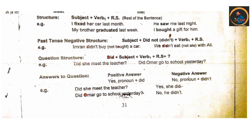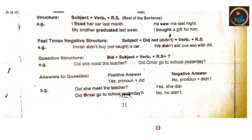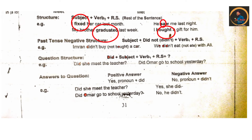Then we have structures: positive, negative, and interrogative with answers to questions. The positive structure is subject plus verb second form plus rest of the sentence. For example: 'I fixed her car last month' — last month is an adverb phrase, and fixed is the second form of fix. More examples: 'My brother graduated last week,' 'He saw me last night,' 'I bought a gift for him.' In positive sentences, we use the second form of the verb.